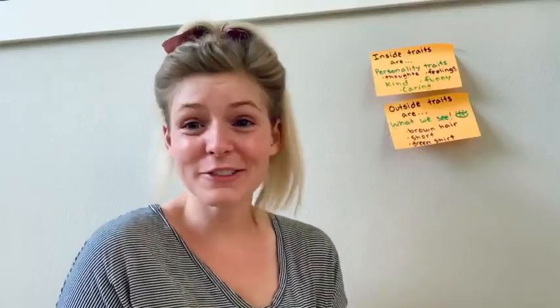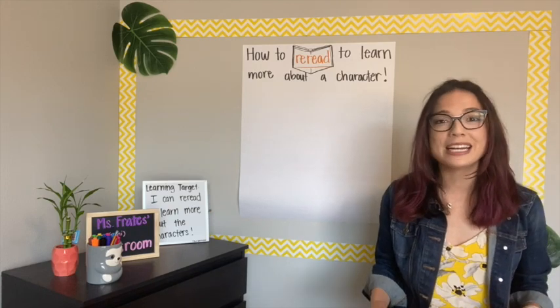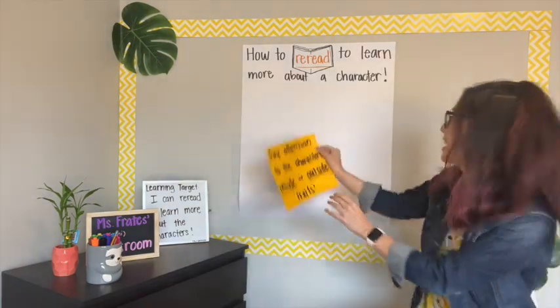And outside traits are what we see. So we could describe the character as having brown hair, is short, has a green shirt. Oh, so how Peter is short — that's an outside trait — and he's also very smart and brave, and that's an inside trait. You've got it. Thanks, Mrs. Spratling. Bye. Mrs. Spratling was right. We need to make sure that we pay attention to the characters' inside and outside traits, just like she taught us.